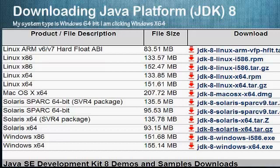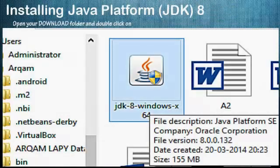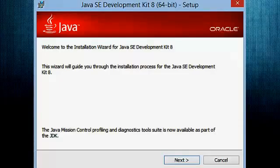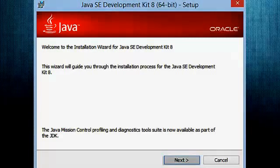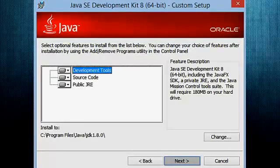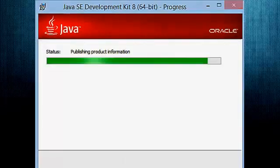After your download is complete, proceed to the next step. Click on the downloaded file. After clicking it, a User Account Control dialog box will prompt. Click Yes and proceed. Now your Java SE Development Kit 8 Setup Wizard has started. Simply click Next to proceed.